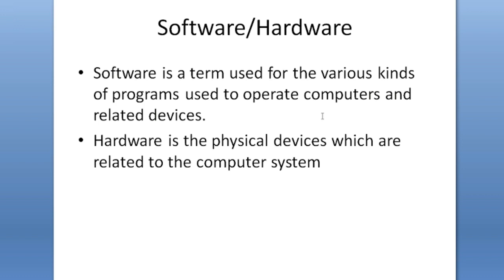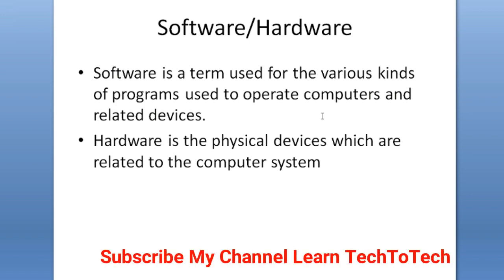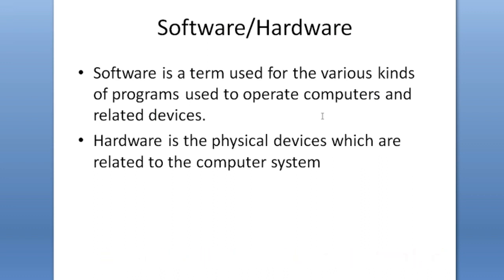Hardware means whatever devices are connected with your computer system or are within the computer system — like your CPU, RAM, ROM, hard disk, keyboard, and mouse. All of these are called hardware. In short, whatever is a physical thing connected to or inside the computer is hardware.